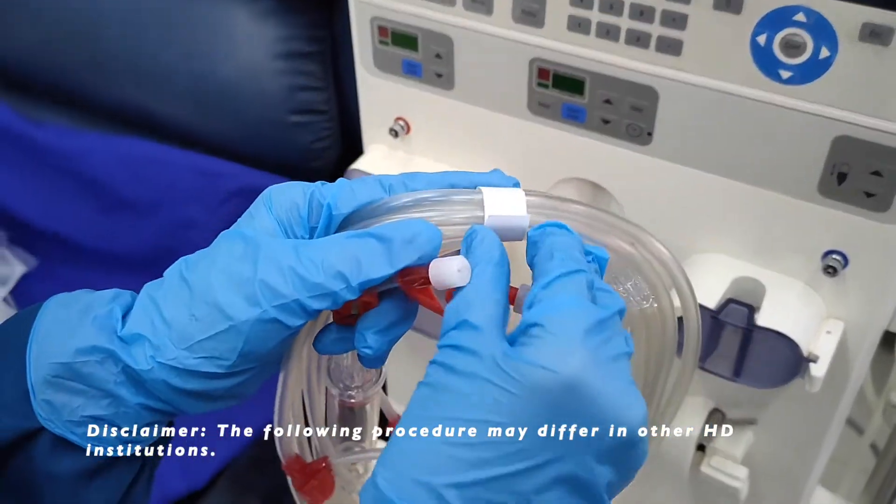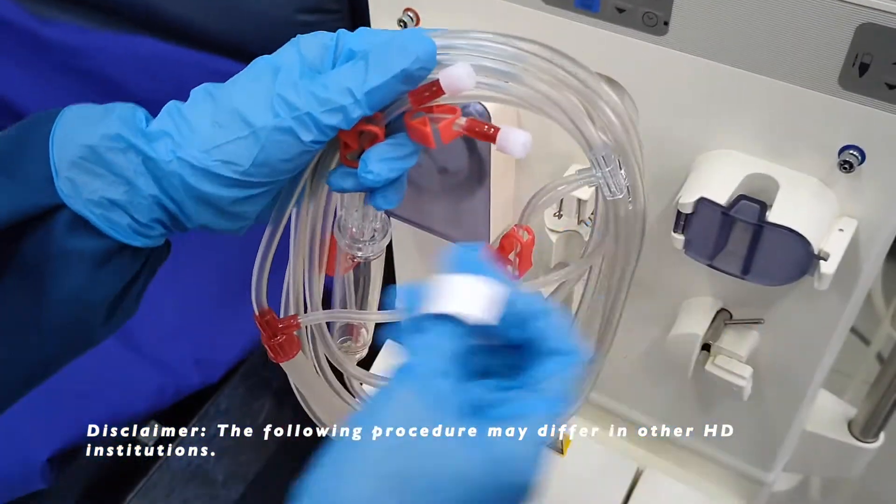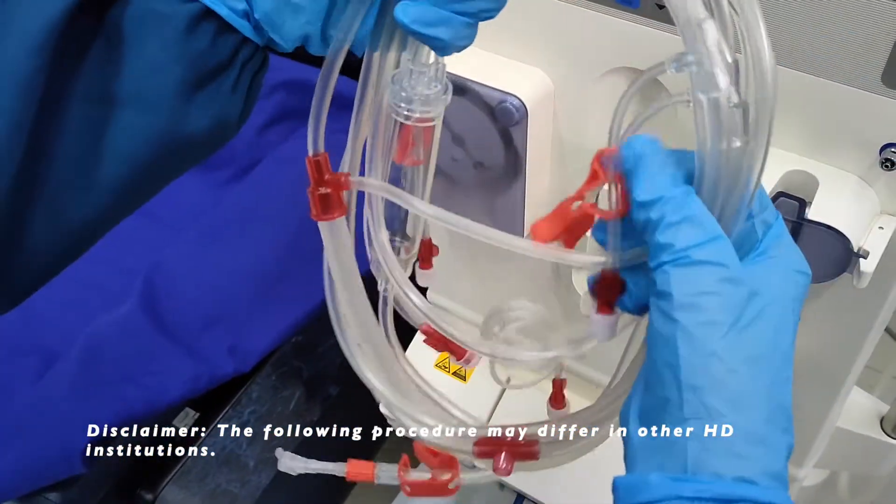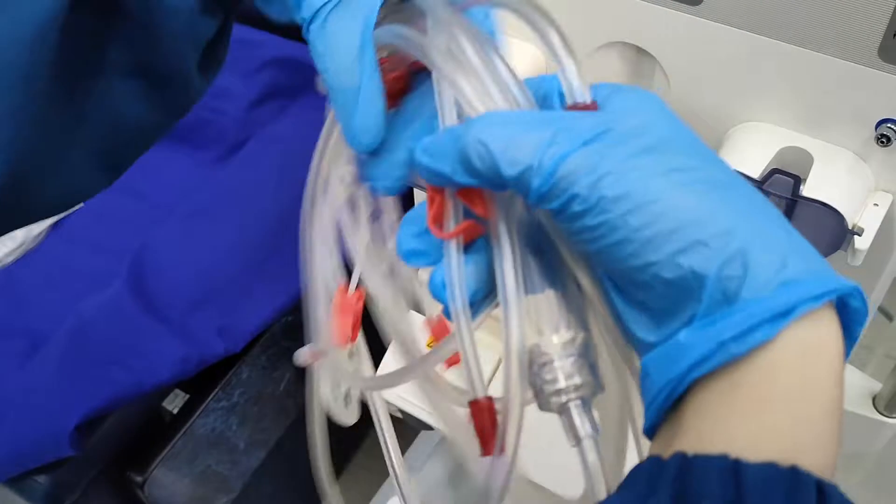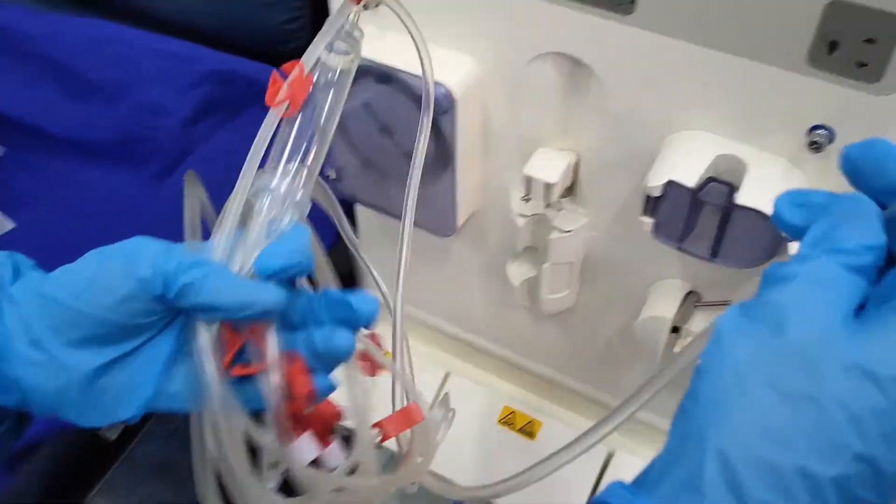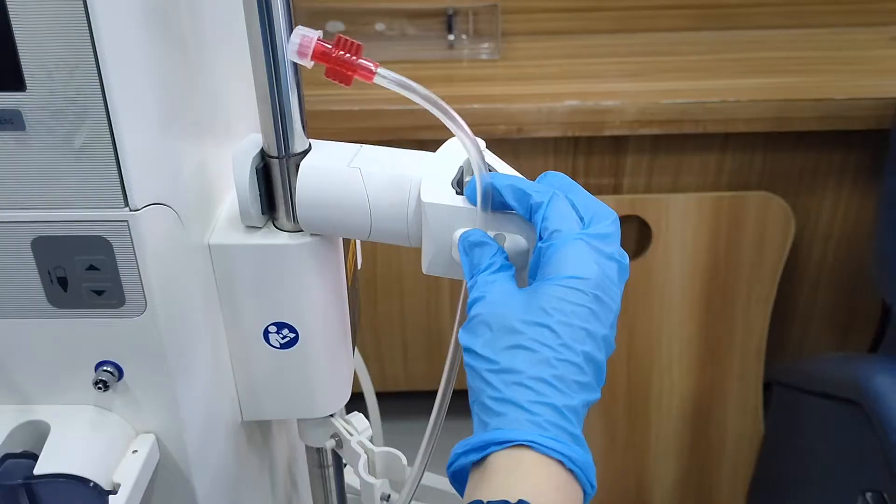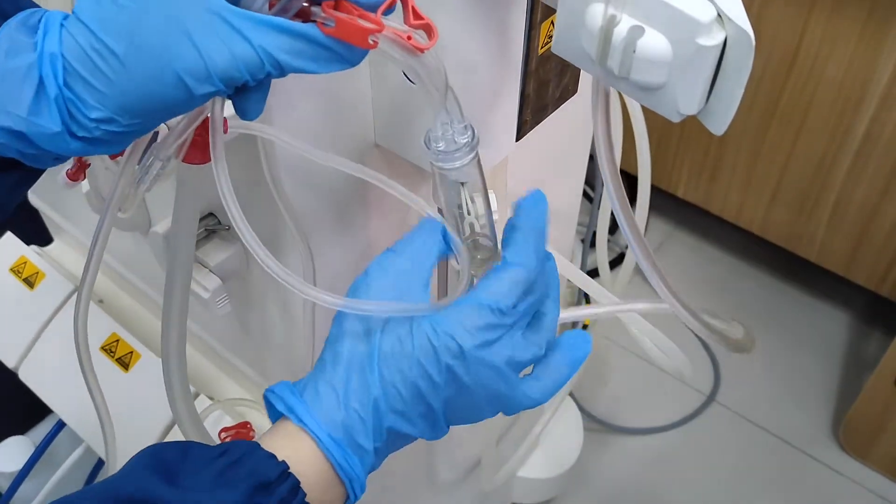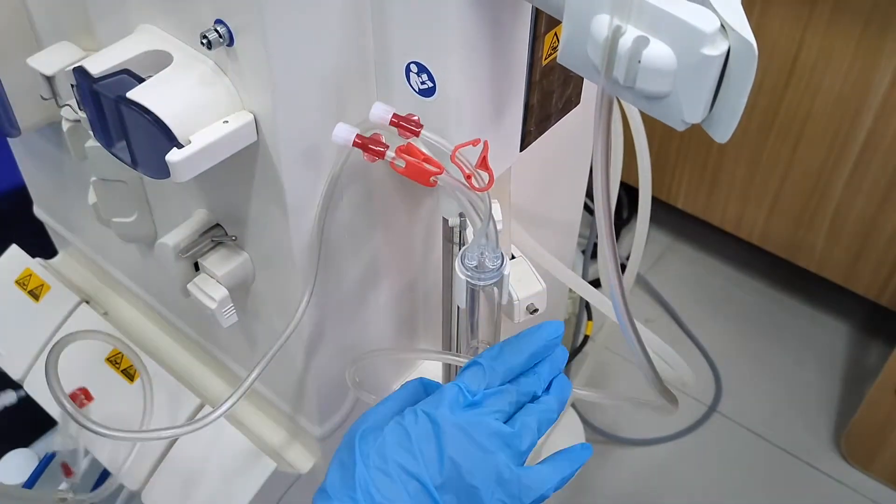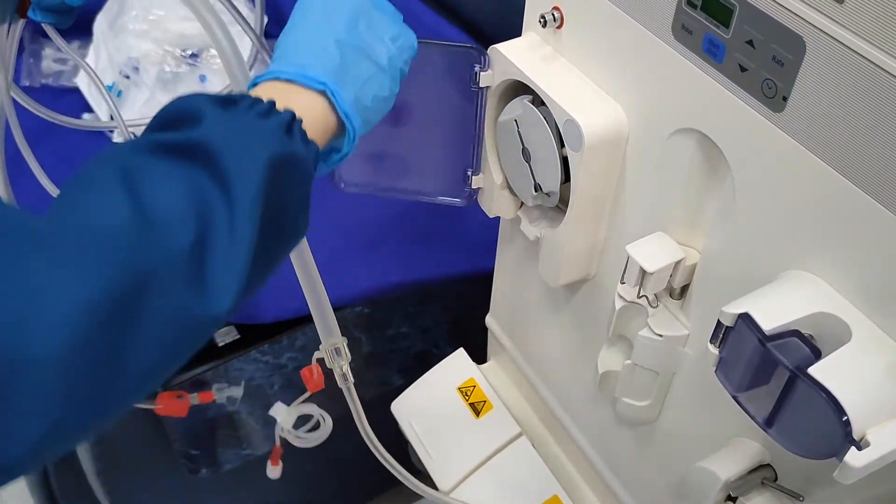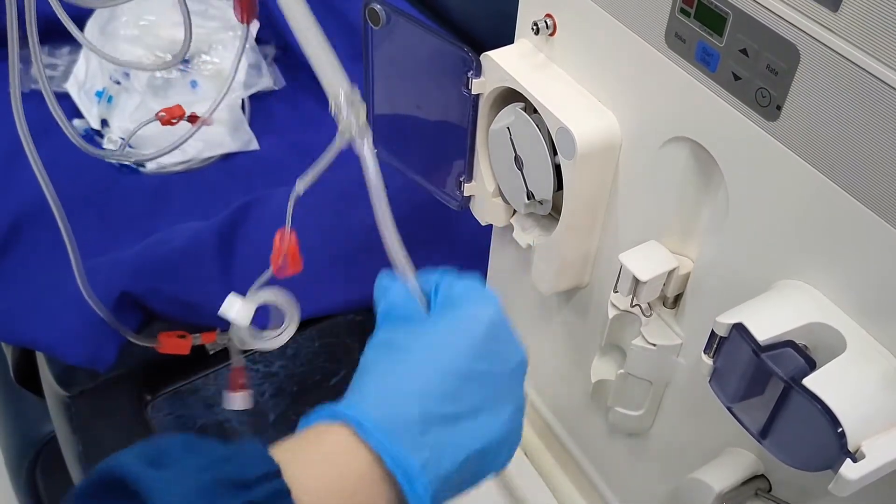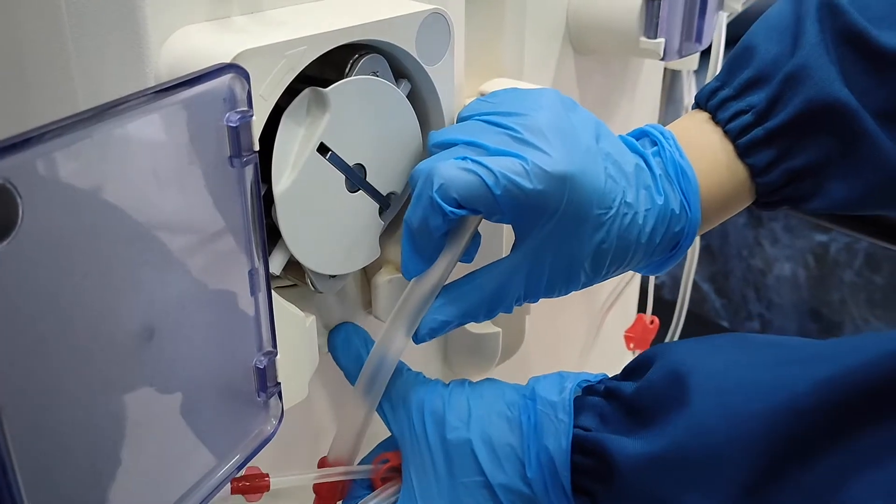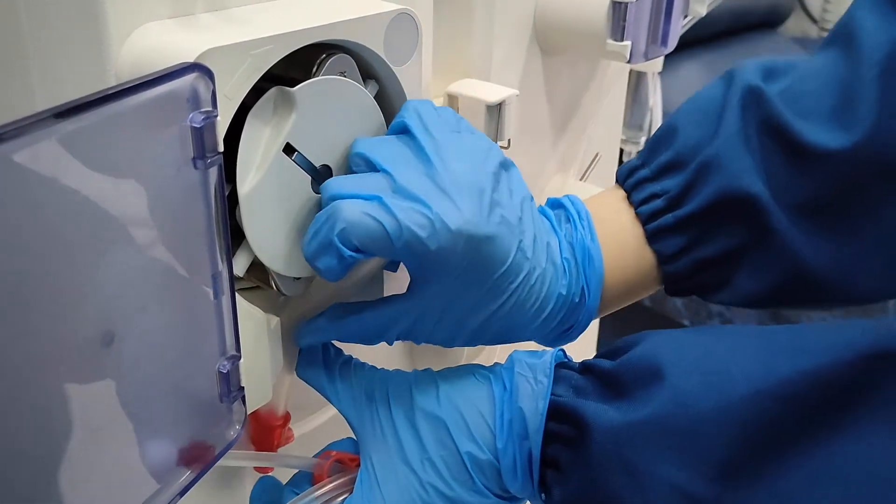In mounting the bloodline, the following procedure may differ in other HD institutions. First, take the arterial bloodline, hang the arterial dialyzer port to a dialyzer holder, then put the arterial chamber in place, open the blood pump, and place or thread the blood pump segment into the blood pump.